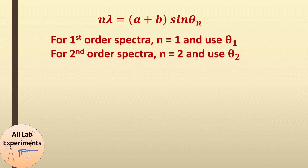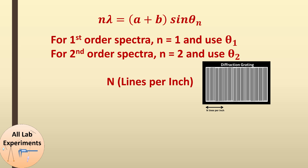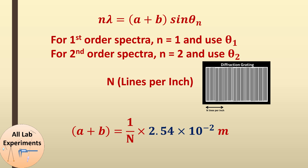The quantity (a + b) is not directly known to us. For any diffraction grating, we are given a quantity N which is lines per inch on that grating. To calculate (a + b), we write it as 1/N, but the unit is in inches. To convert to meters, we multiply by 2.54 × 10⁻². Using this, we can calculate (a + b) and then find the value of λ, the wavelength of sodium light, for both first and second order spectra.